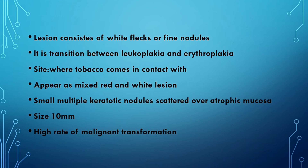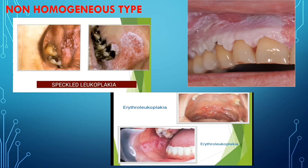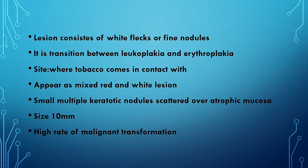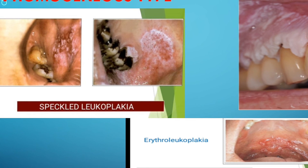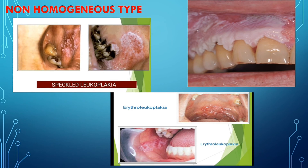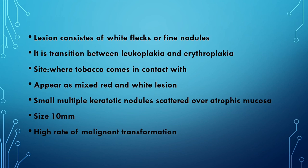Non-homogeneous leukoplakia appears as a mixed red and white lesion — homogeneous has only a white component while non-homogeneous has both red and white components. Small multiple keratotic nodules are scattered over atrophic mucosa, as seen in the pictures. The size is usually 10 mm. This type has a high rate of malignant transformation. Don't forget to check Part 2 of leukoplakia, where we will discuss histological features and treatments.